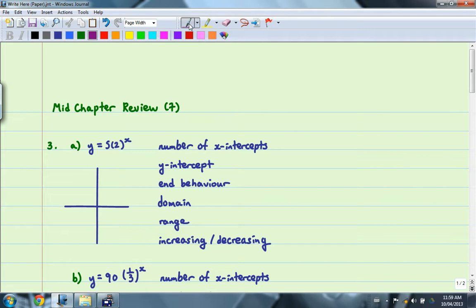Question number 3 asks us to state the number of x-intercepts, the y-intercept, the end behavior, domain, and range for each function without graphing the function. We are going to sketch a graph, but we're going to do it at the very end. We'll also state whether the function is increasing or decreasing.